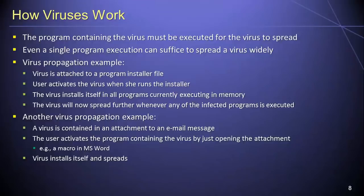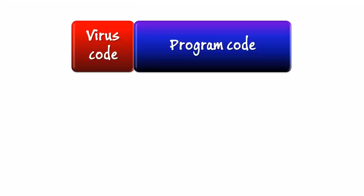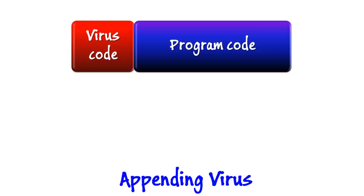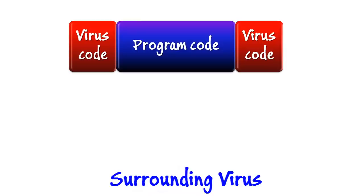Viruses can be classified into four different categories according to the ways in which they attach themselves to their host programs. First are appending viruses, which attach themselves either to the beginning or to the end of their host program's code — most often inserting in front of the first legitimate program instruction so the virus code runs whenever the program is executed. Next are surrounding viruses, which execute both before and after the host program, often using the post-execution component to mask the presence of the virus.